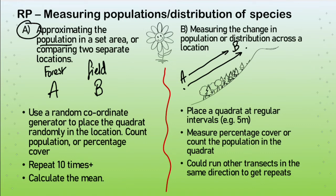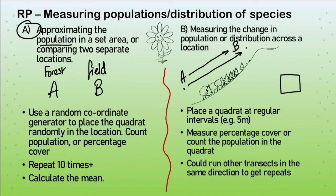Both methods use a quadrat — a regularly shaped square, maybe 50 centimetres on each side. For the first method, measuring differences between field and forest, we use a random coordinate generator to place quadrats randomly and eliminate bias. If you're counting daisies, it's tempting to place the quadrat where there are loads, but to accurately estimate population we must place it randomly. You create a map of the area, generate coordinates across a grid, and randomly generate locations.